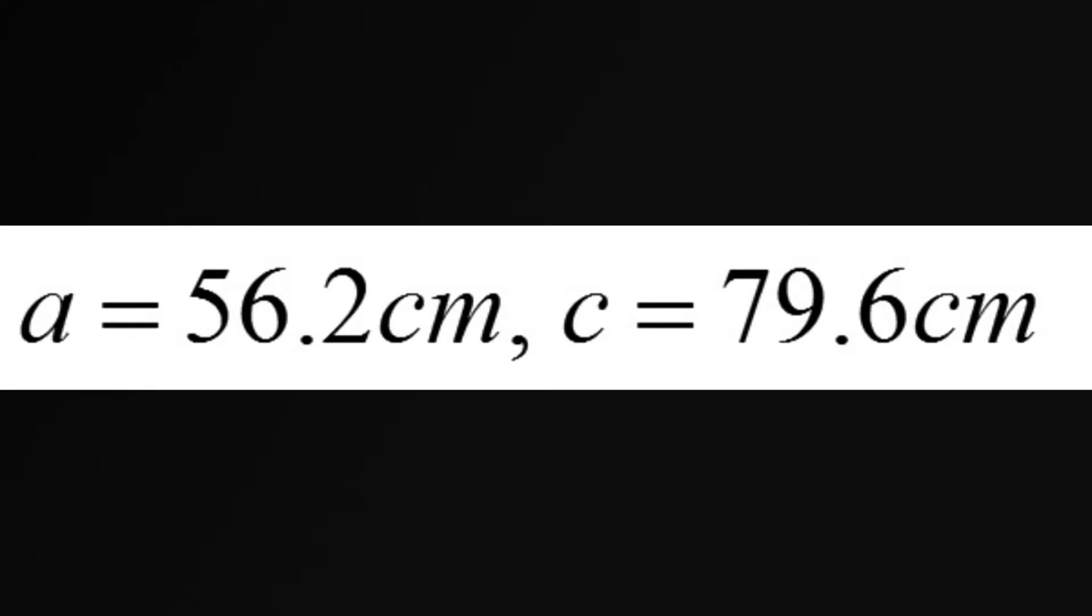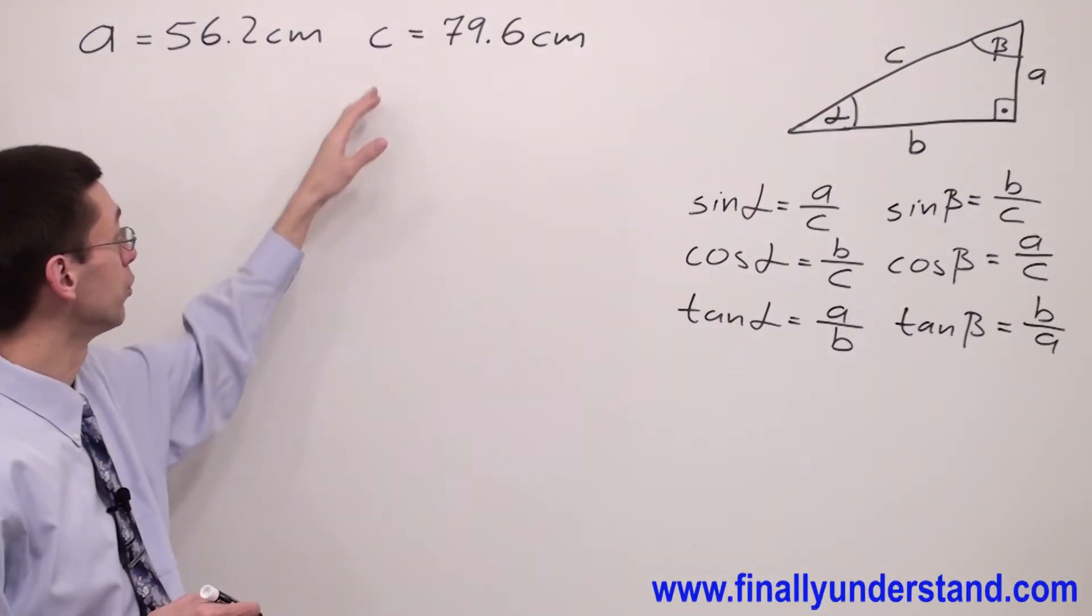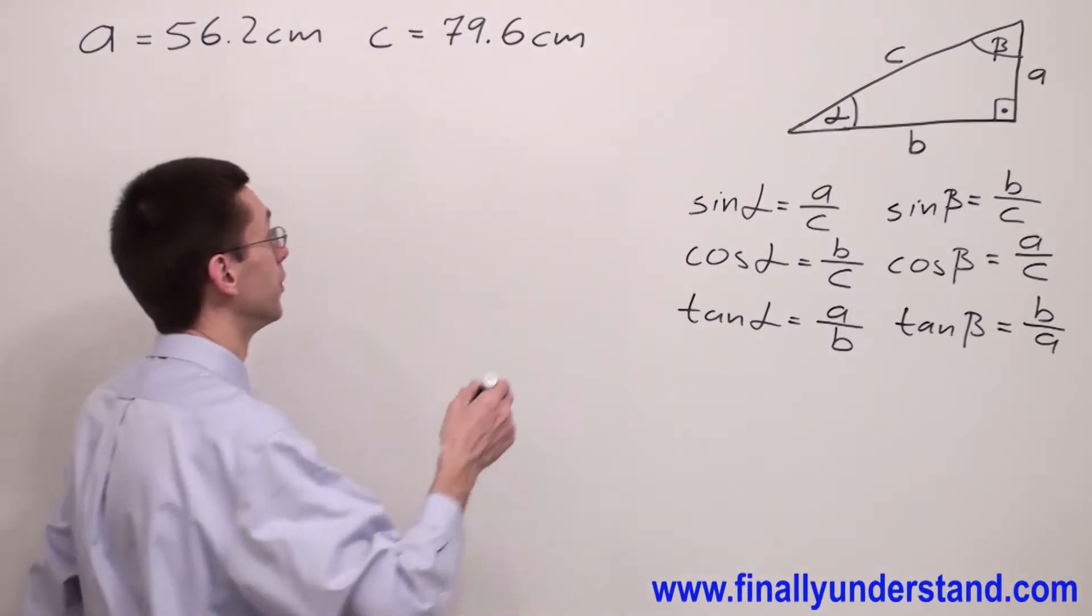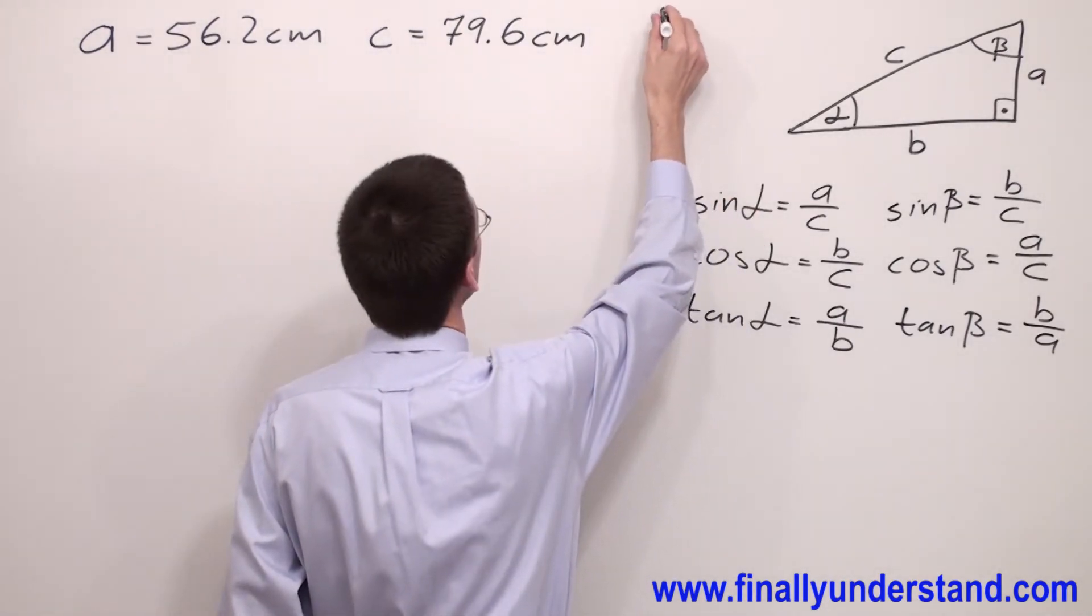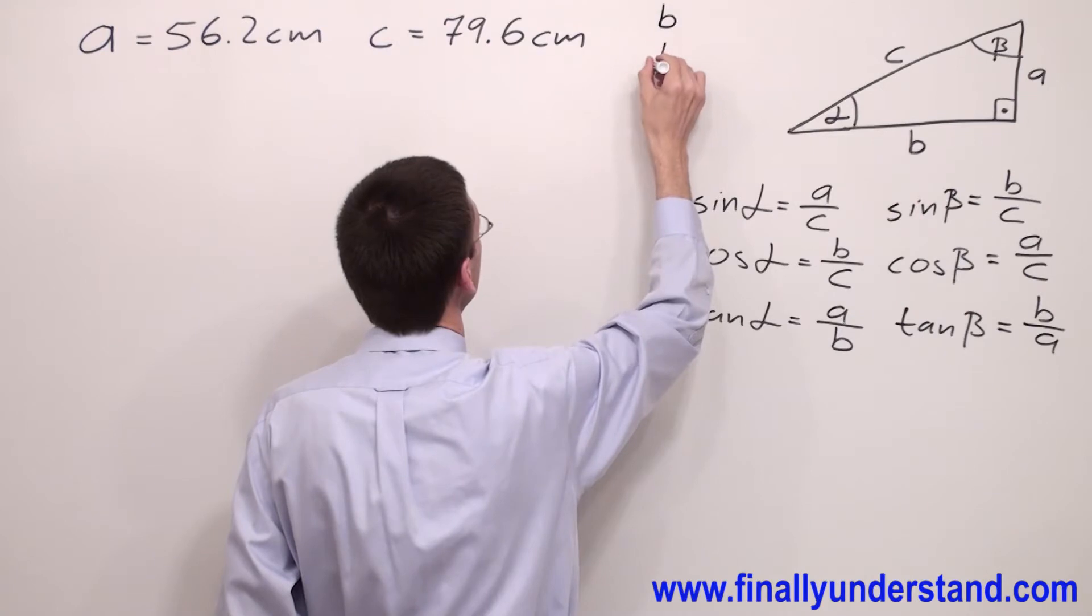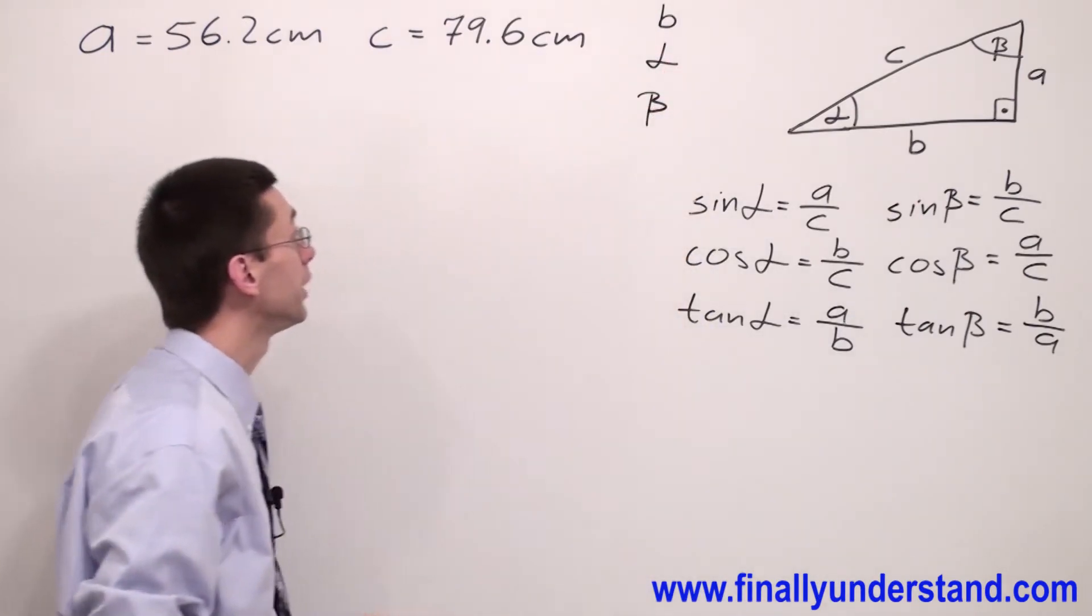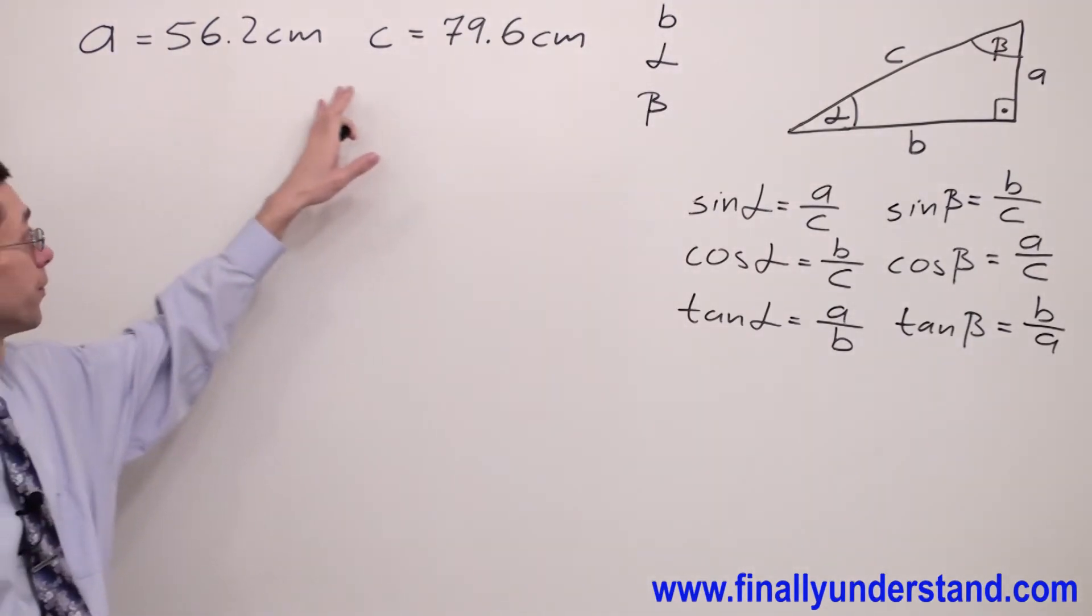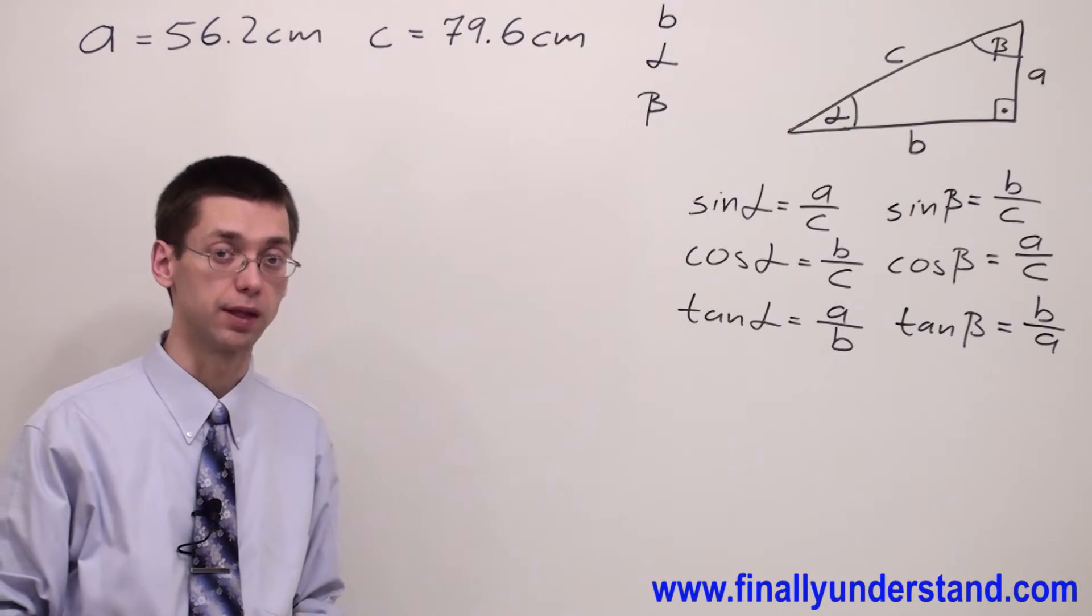We have another example on the board. Again we have two sides given, side a and side c. We're supposed to find missing parts of the triangle. We have to find side b, we're supposed to find angle alpha, and we're supposed to find angle beta.